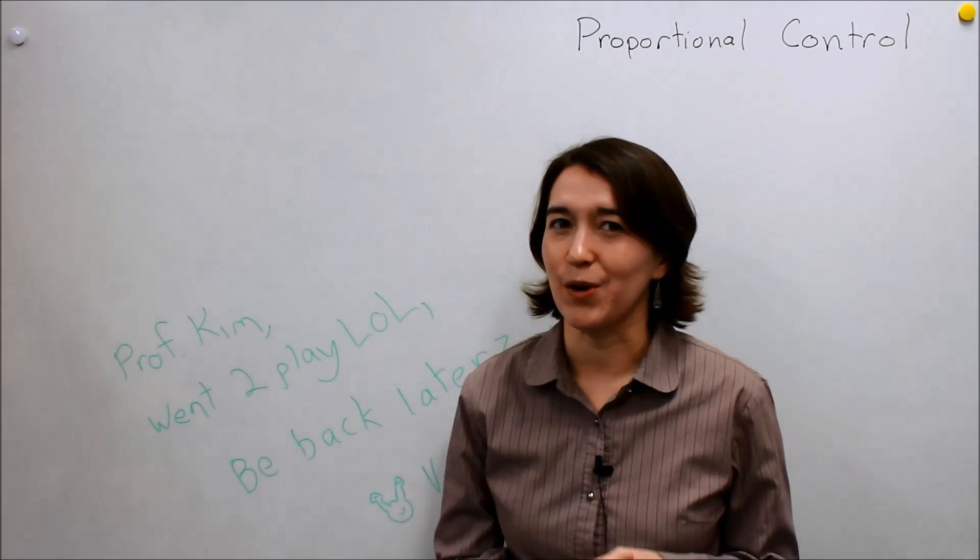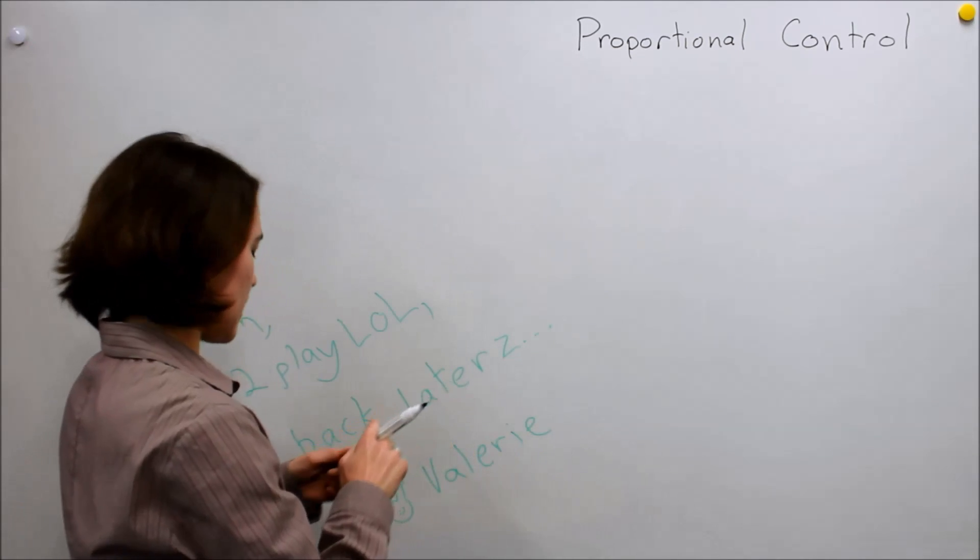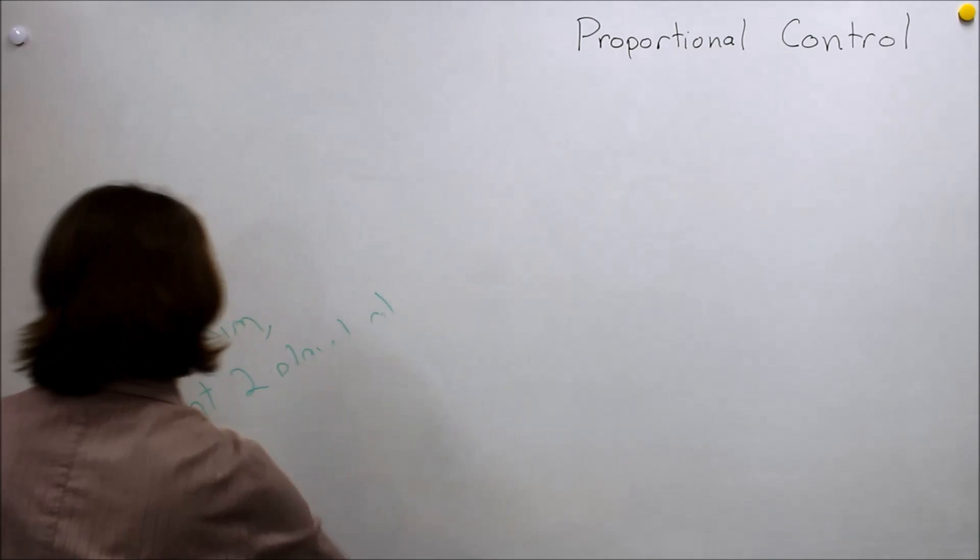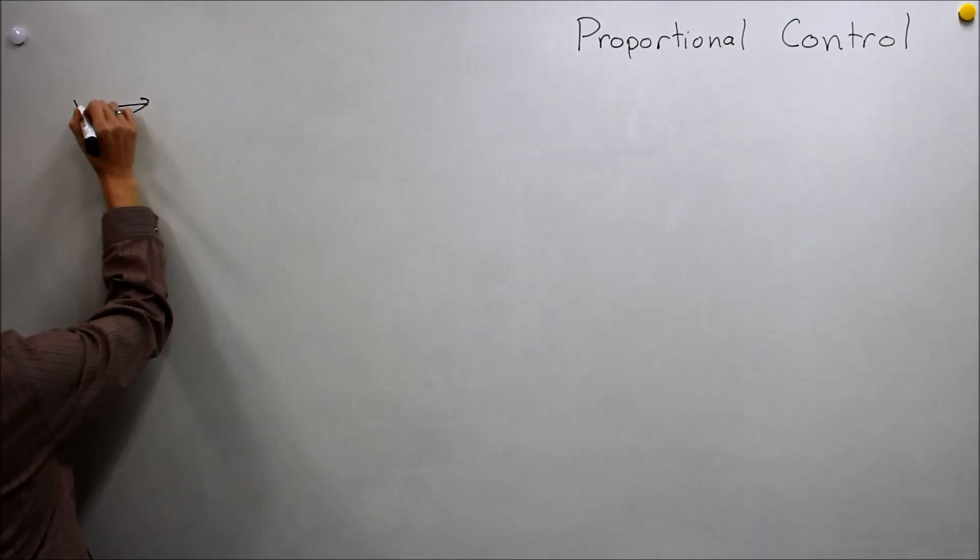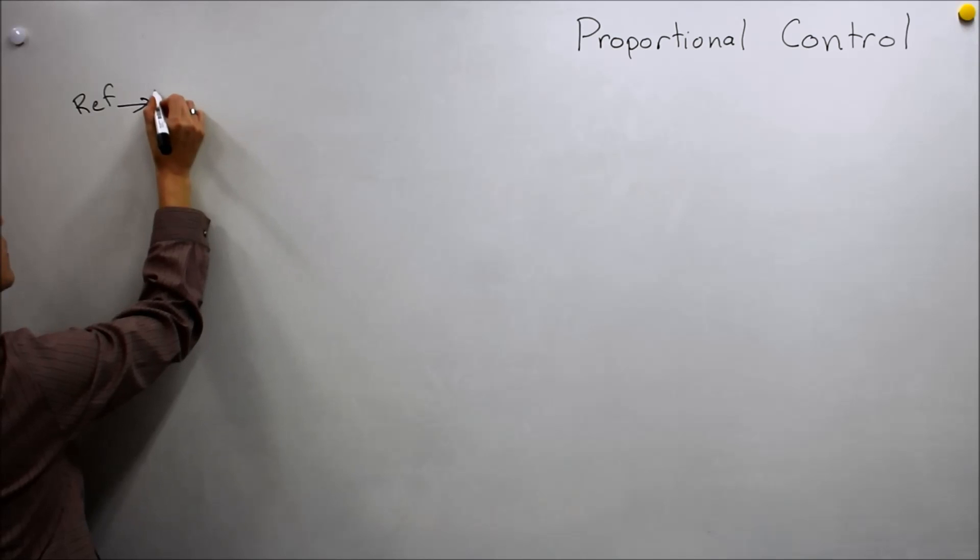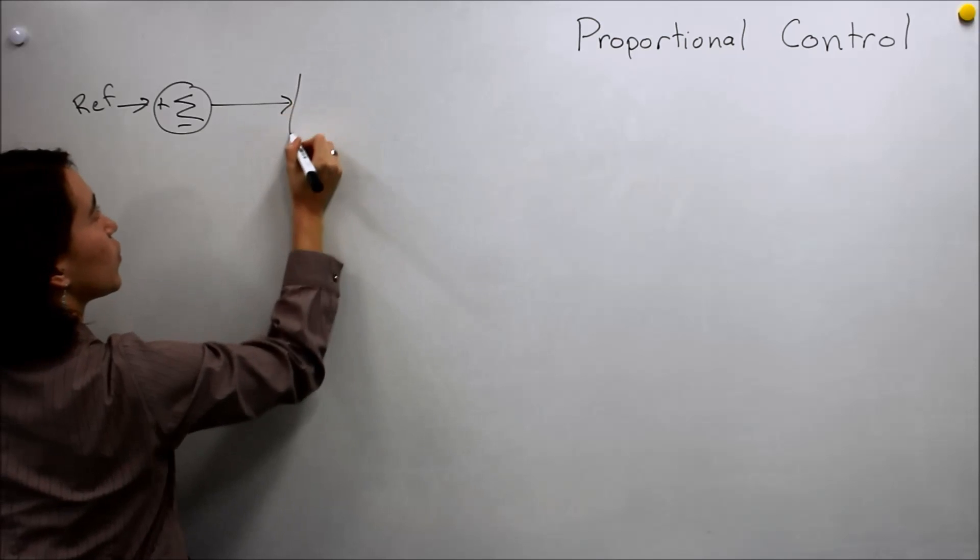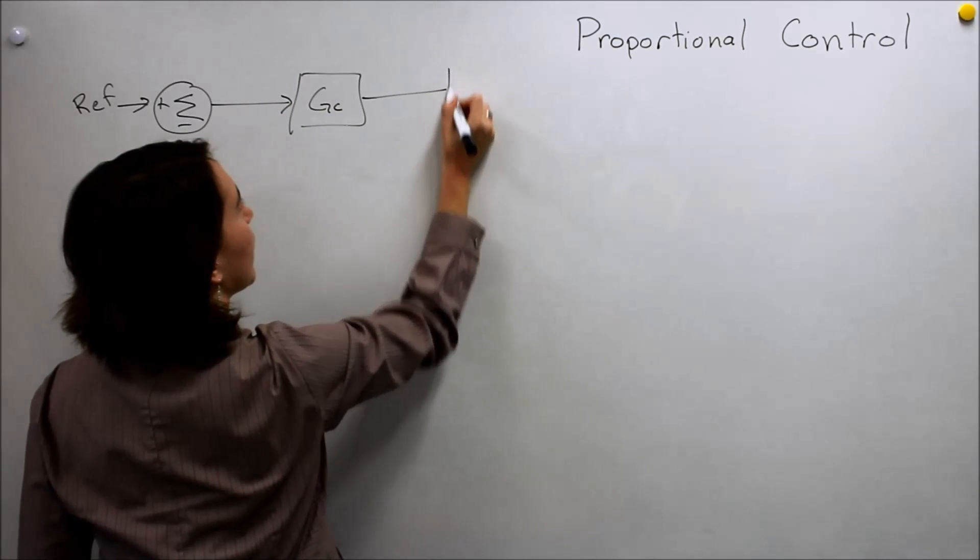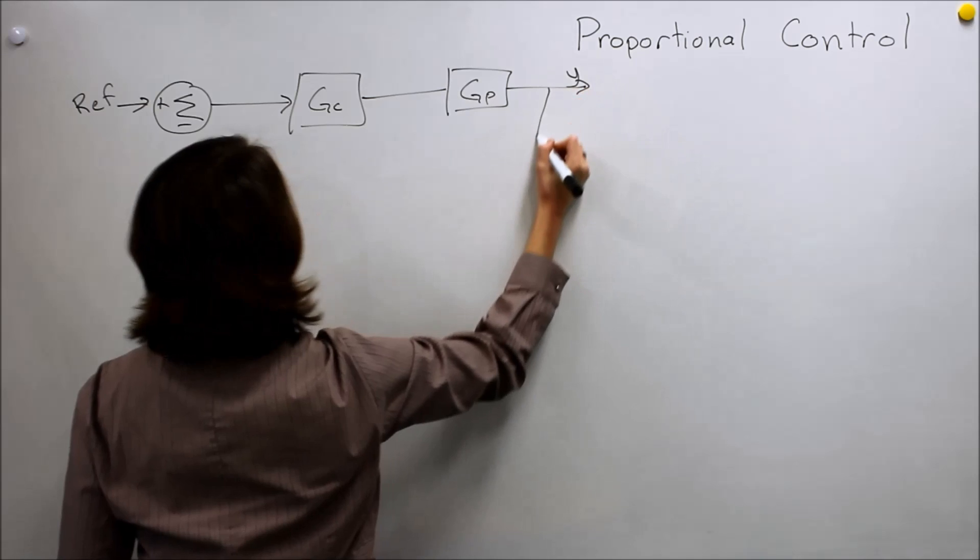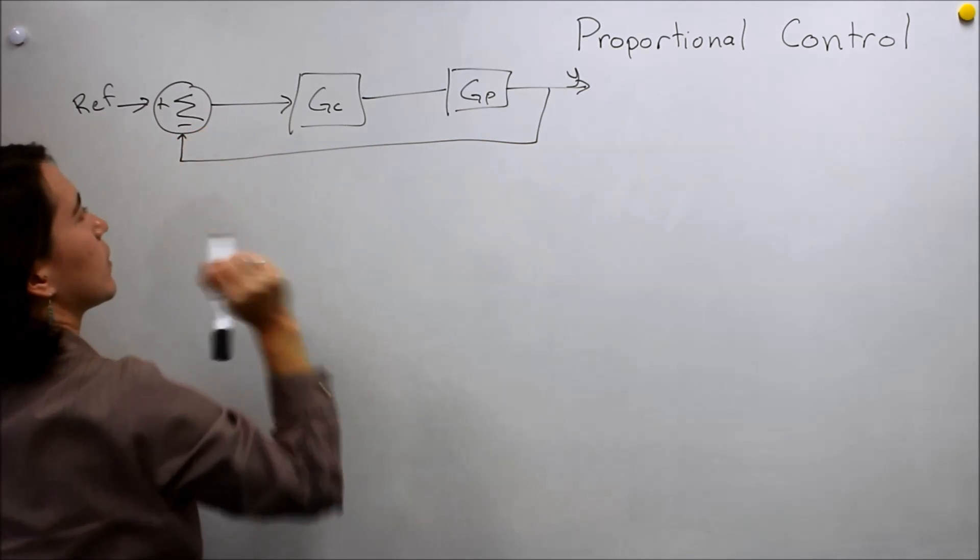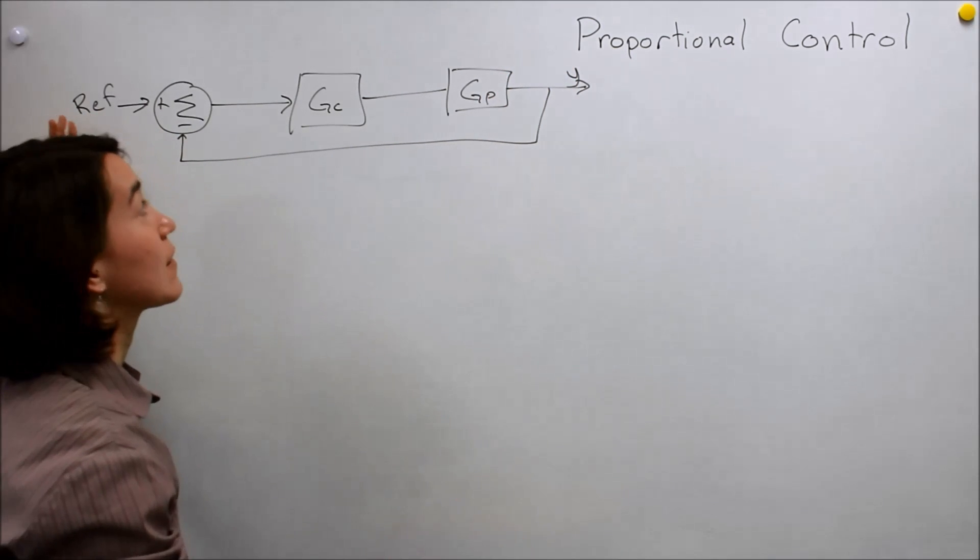So today, we're going to talk about proportional control. If you remember our basic drawing from before, we have, right over here, we have some reference point, reference here, and then we have our summer, summation, positive, negative, then we have a control here, and we're calling this G of C, and then we have our plant, right, G of P, and then our output, whatever it is, and then we feed that back through here, and the goal is to make, control this output Y to be the same as this reference, and this is a basic feedback control.